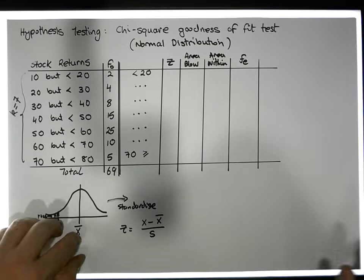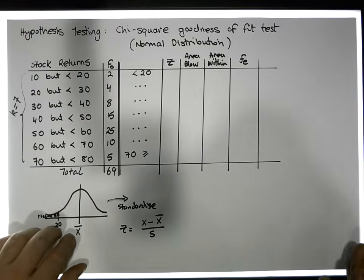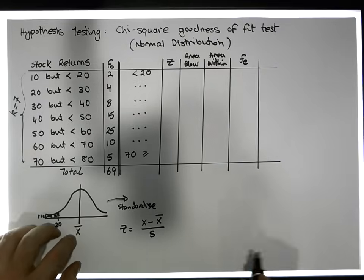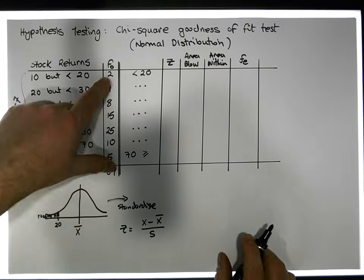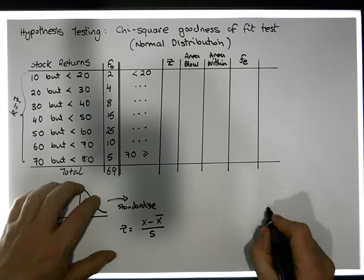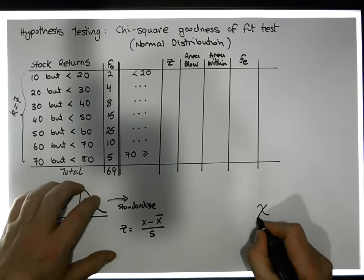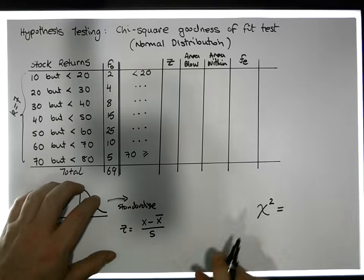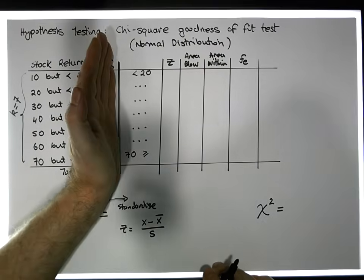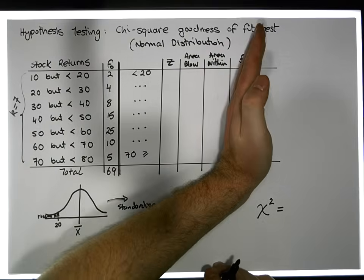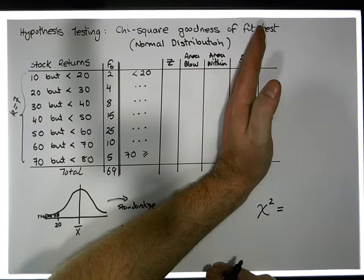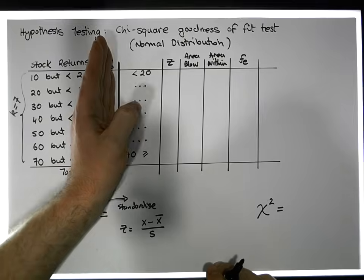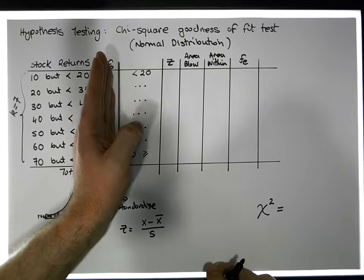Once we have the expected frequencies, we're ready to proceed with the chi-squared goodness of fit test. The chi-squared test statistic is based on the difference — more specifically, the squared difference — between the observed frequencies and the expected frequencies.